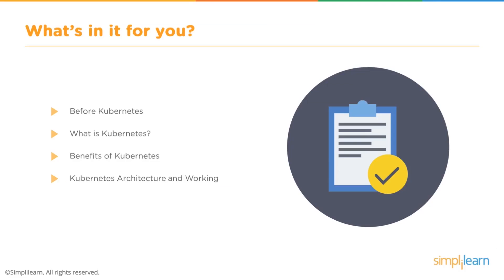We're going to break up this presentation into four key areas. We're going to talk about life before Kubernetes, what is Kubernetes, the benefits that Kubernetes brings to you particularly if you are using containers in a DevOps environment, and finally we're going to break down the architecture and working infrastructure for Kubernetes so you understand what's happening and why the actions are happening the way that they are.